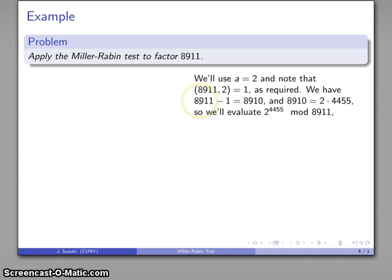The n minus 1 is 8910, which is 2 times 4455. I'll evaluate 2 to the 4455 mod 8911 and square it.